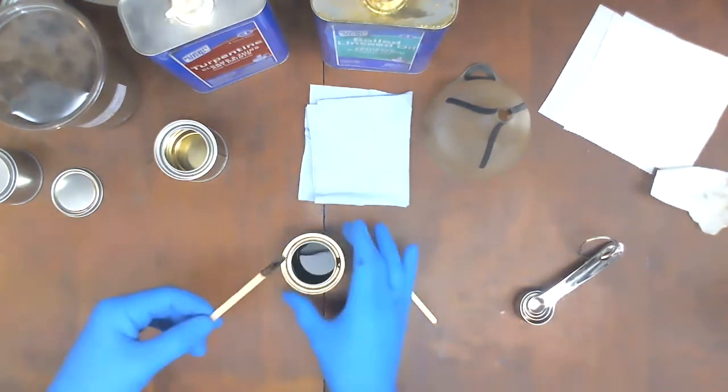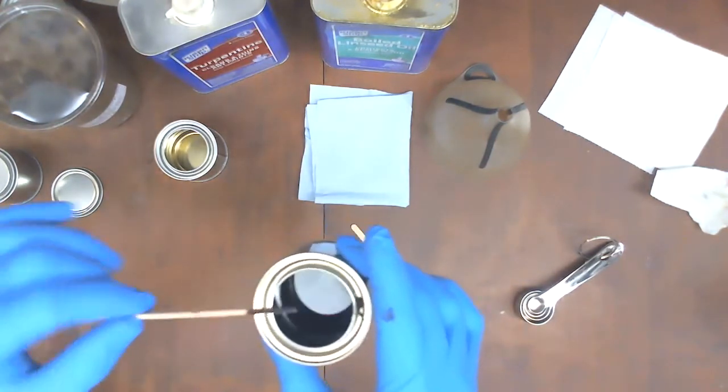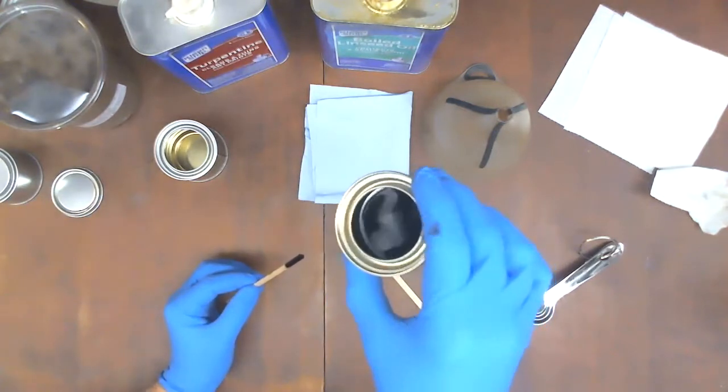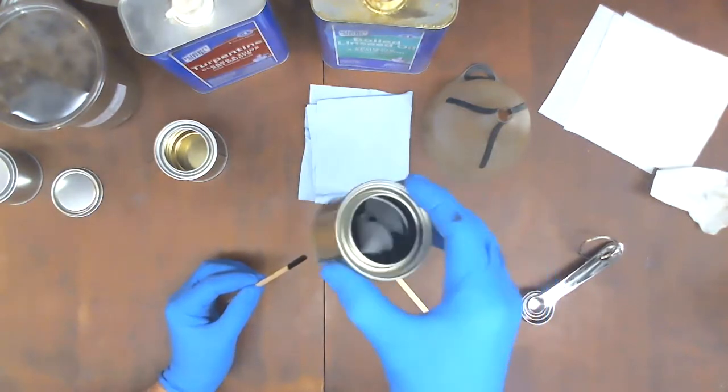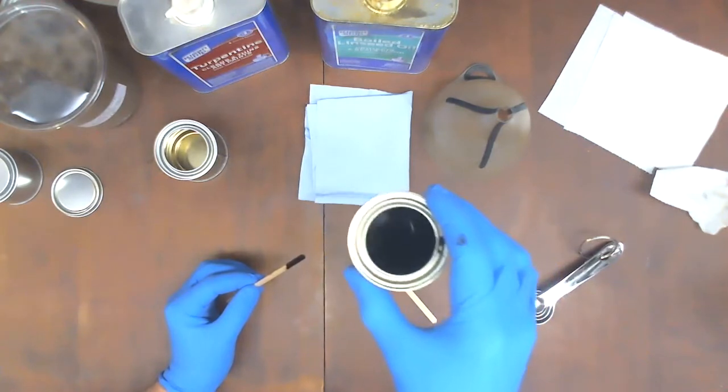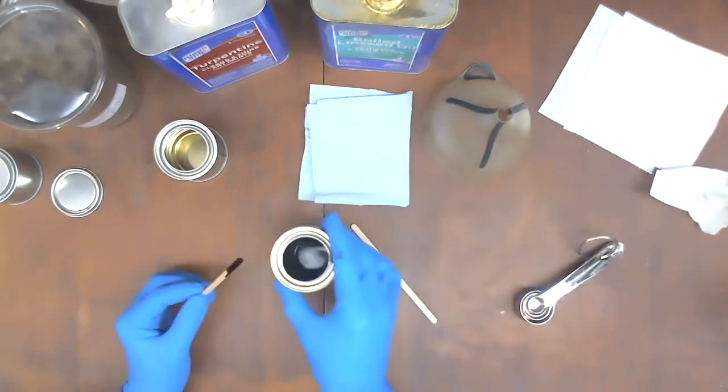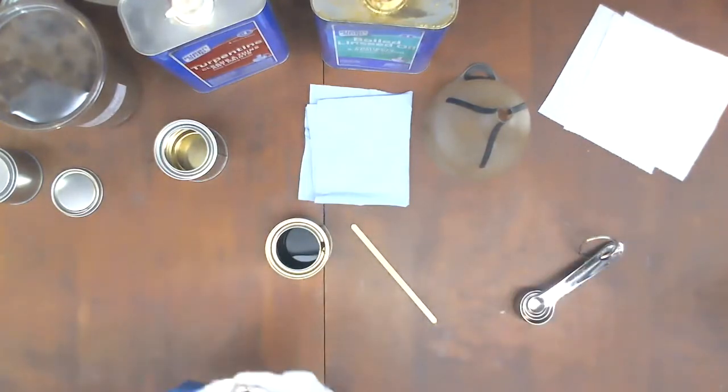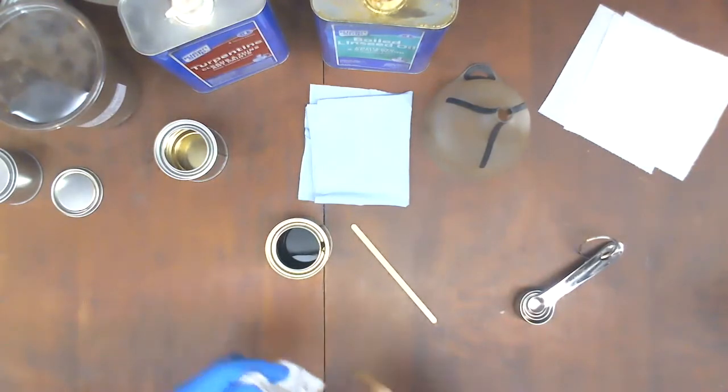So you can see that certainly has colored my little wooden stirring stick. You can see the way it's moving in the can there. It is just basically like turpentine, like water in there. Right now we mostly have the asphalt simply in suspension. It will take some time to dissolve into the turpentine. And as it dissolves, it will thicken considerably.